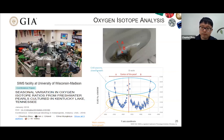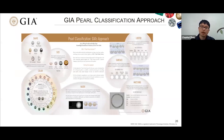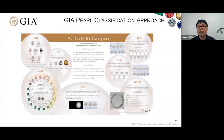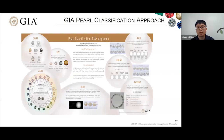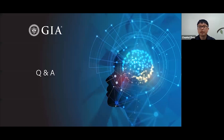This concludes all the techniques I planned to talk about today. We did not have time to talk about pearl classification — which is an entirely different story but also an important part of pearl testing. Pearl classification is evaluating the quality of pearls, like diamond grading. At GIA, we have a system to classify pearls using seven value factors. This is a very important part of pearl testing, but outside the scope of today's talk. That being said, I'm happy to take any questions from you. Thank you.